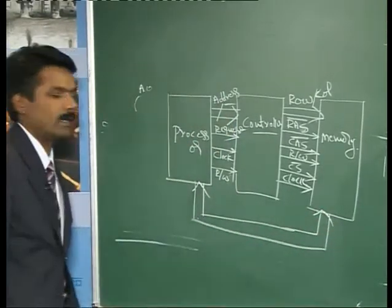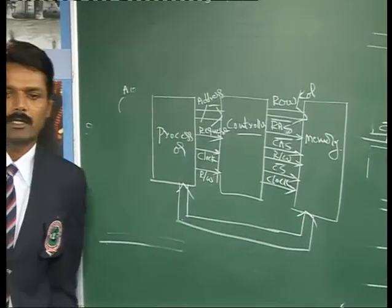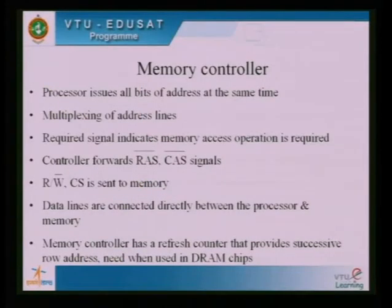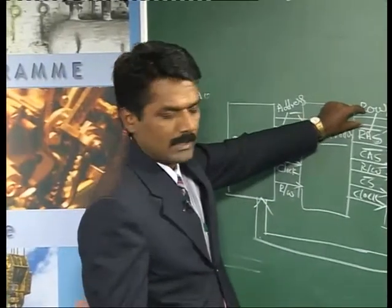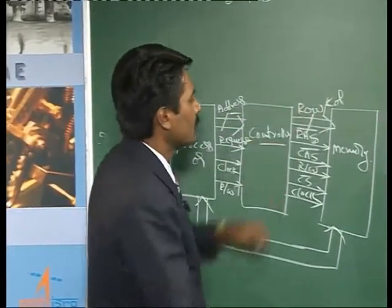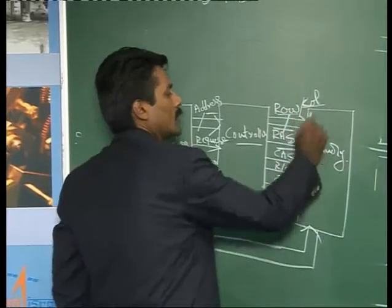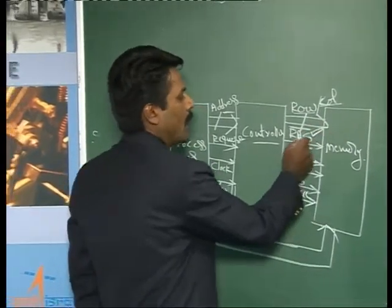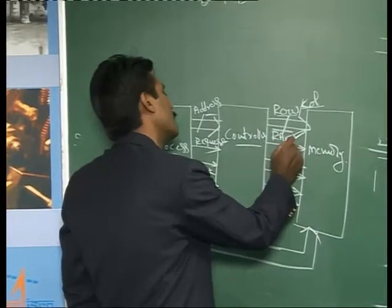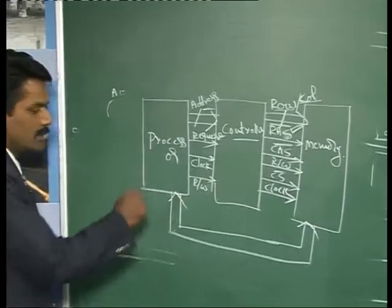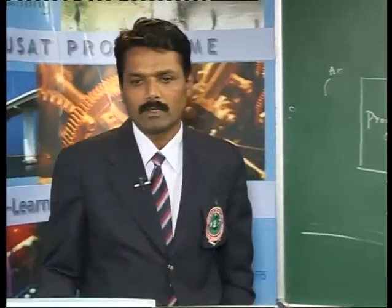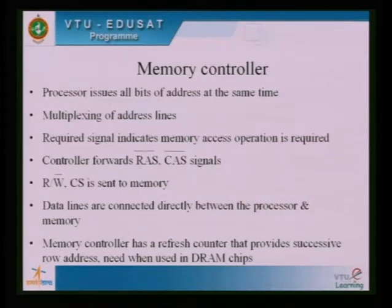Data lines are directly connected between the processor and the memory unit — either for read or write. An important feature is multiplexing the address lines: the row address and column address are latched using RAS and CAS. The memory controller also has a refresh counter that provides successive row addresses when used with DRAM chips, since DRAM requires a refresh circuit.